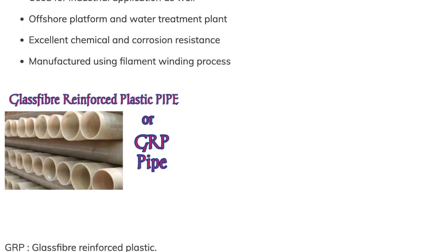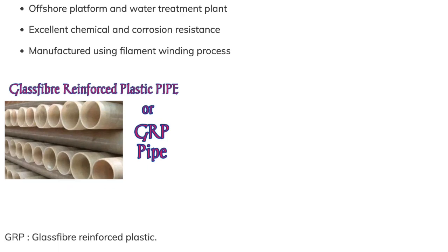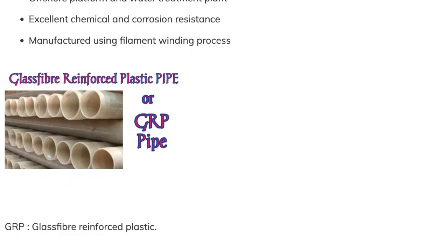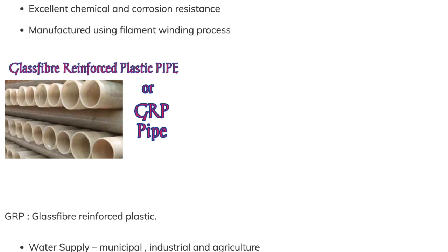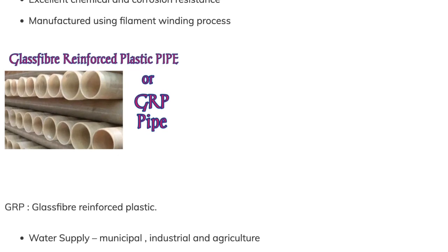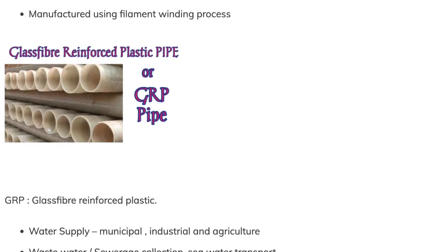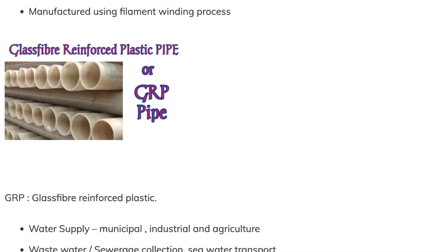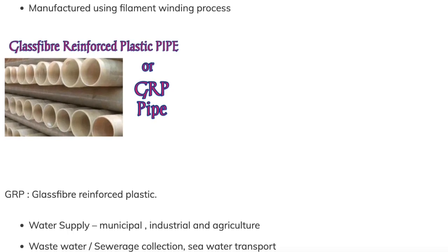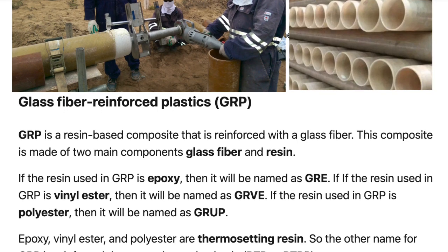GRP is glass fiber reinforced plastic. Its applications are in water supply, municipal, industrial, and agricultural purposes, as well as wastewater sewerage collection and seawater transport.